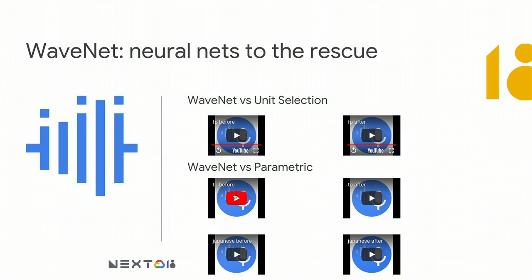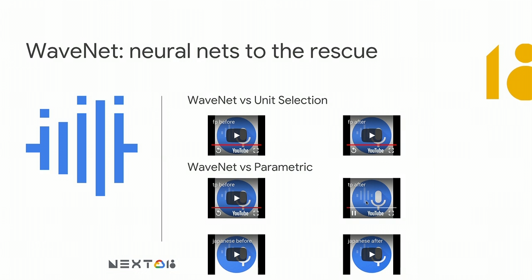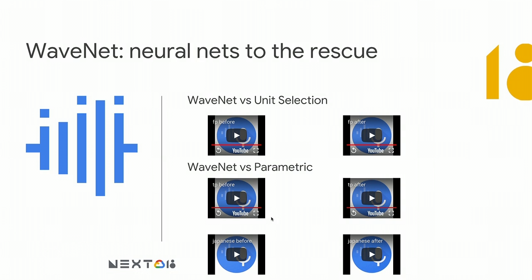With respect to parametric, the difference is much more clear — evident even through these speakers. Parametric example: 'A single WaveNet can capture the characteristics of many different speakers with equal fidelity.' And WaveNet: 'A single WaveNet can capture the characteristics of many different speakers with equal fidelity.' These two models were trained on the same speaker with the same amount of data, and you can see the WaveNet one sounds much more natural.